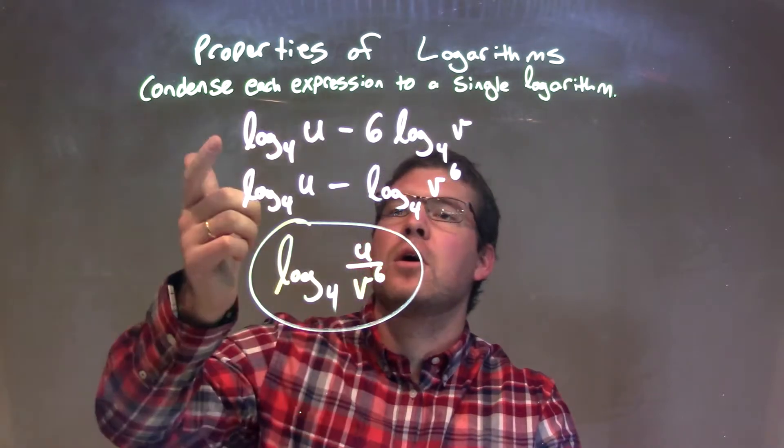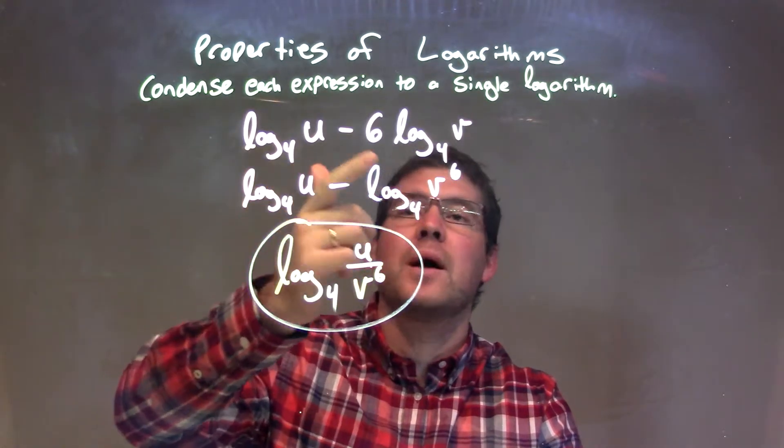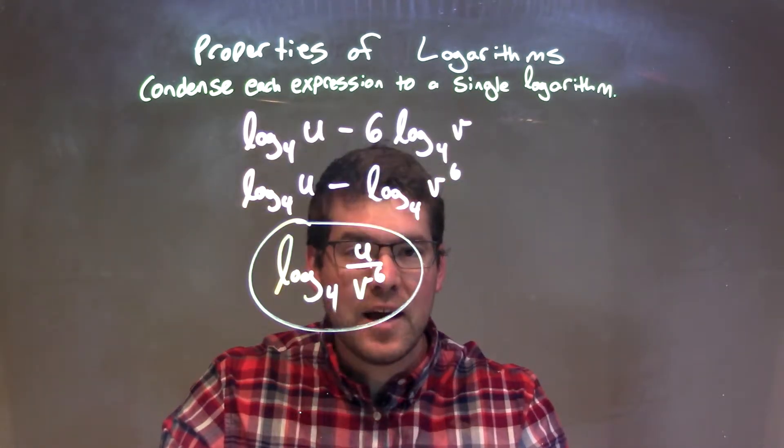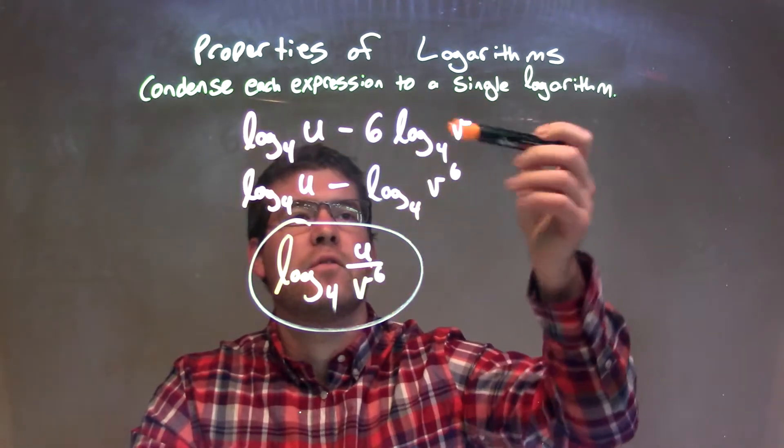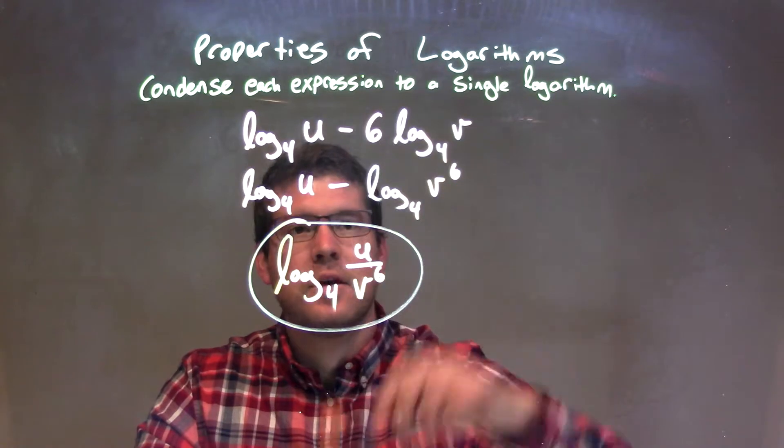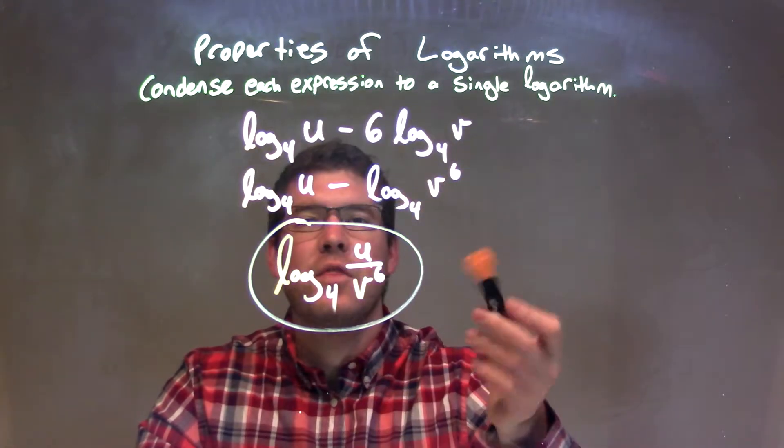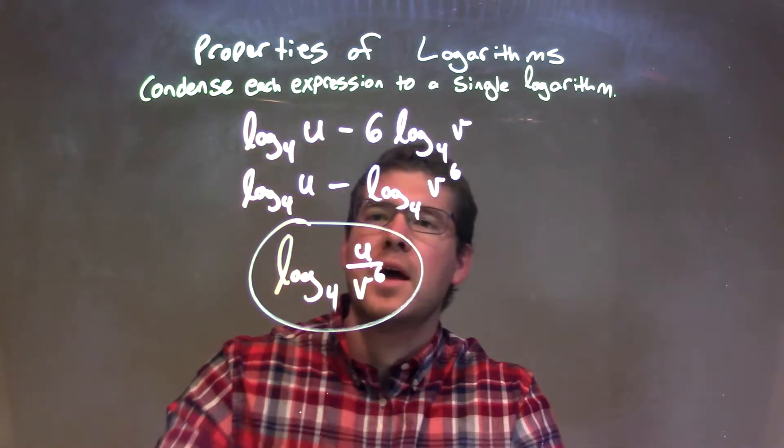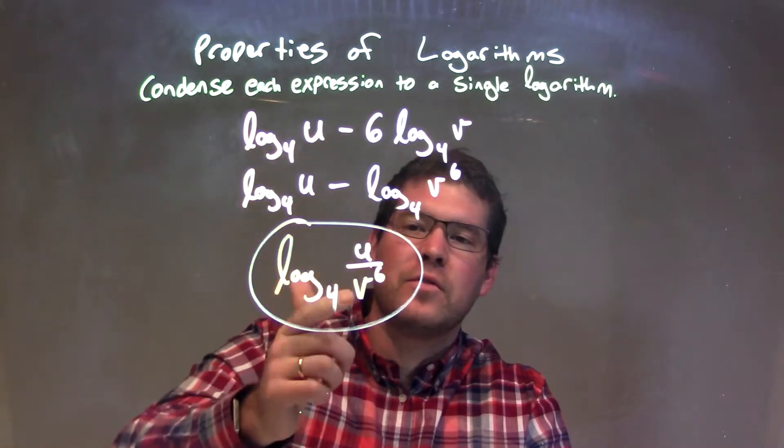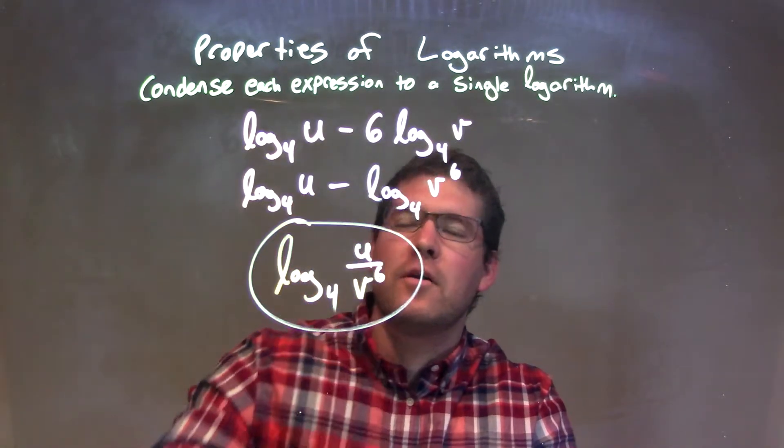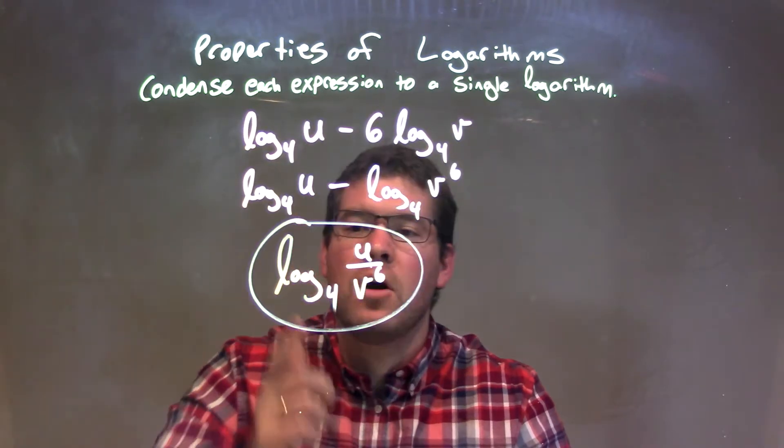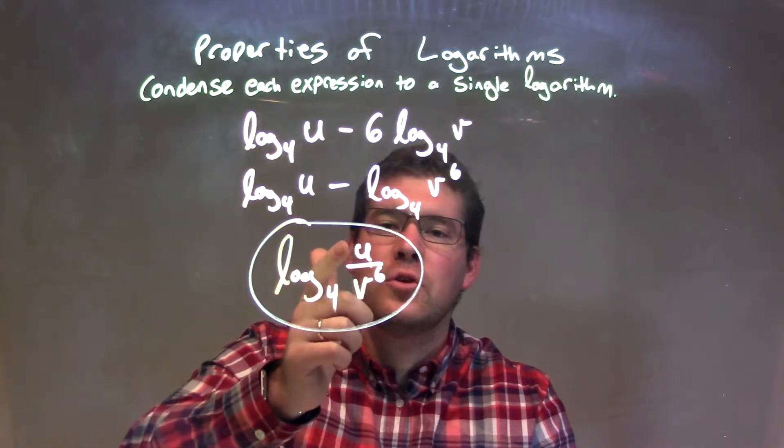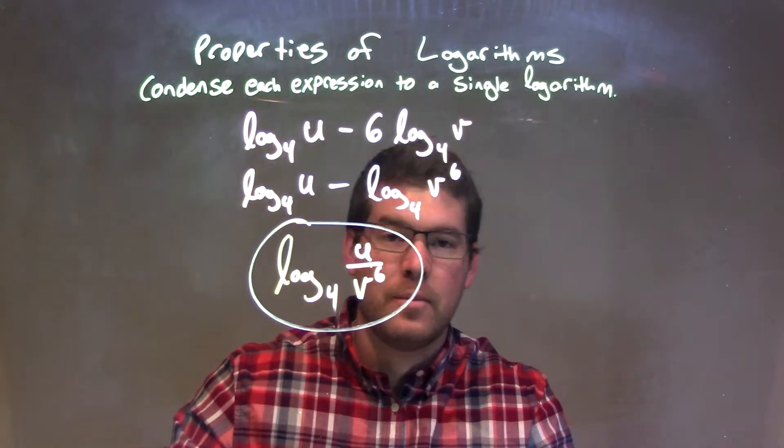So, let's recap. We're giving log base 4 of u minus 6 log base 4 of v, and we want to condense that. The 6 that's in front of the log turns into an exponent, v to the 6th power. Then, when we condense this to be one big logarithm, that subtraction turns into a division of these two variables. So, again, our final answer here is log base 4 of u over v to the 6th power.